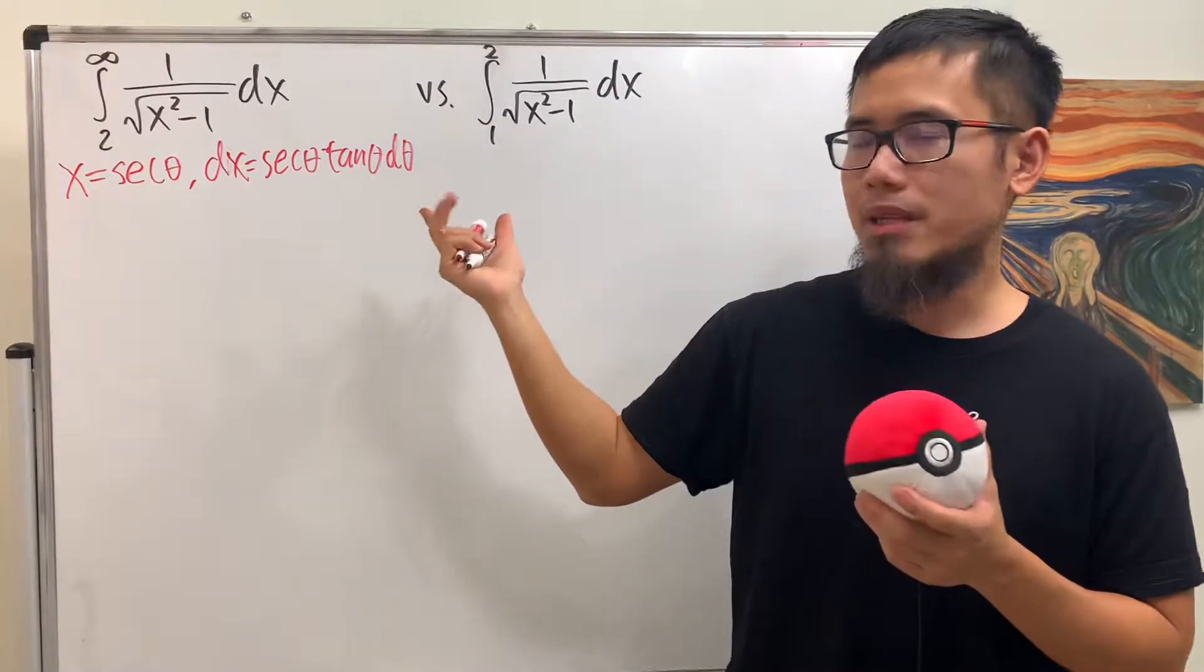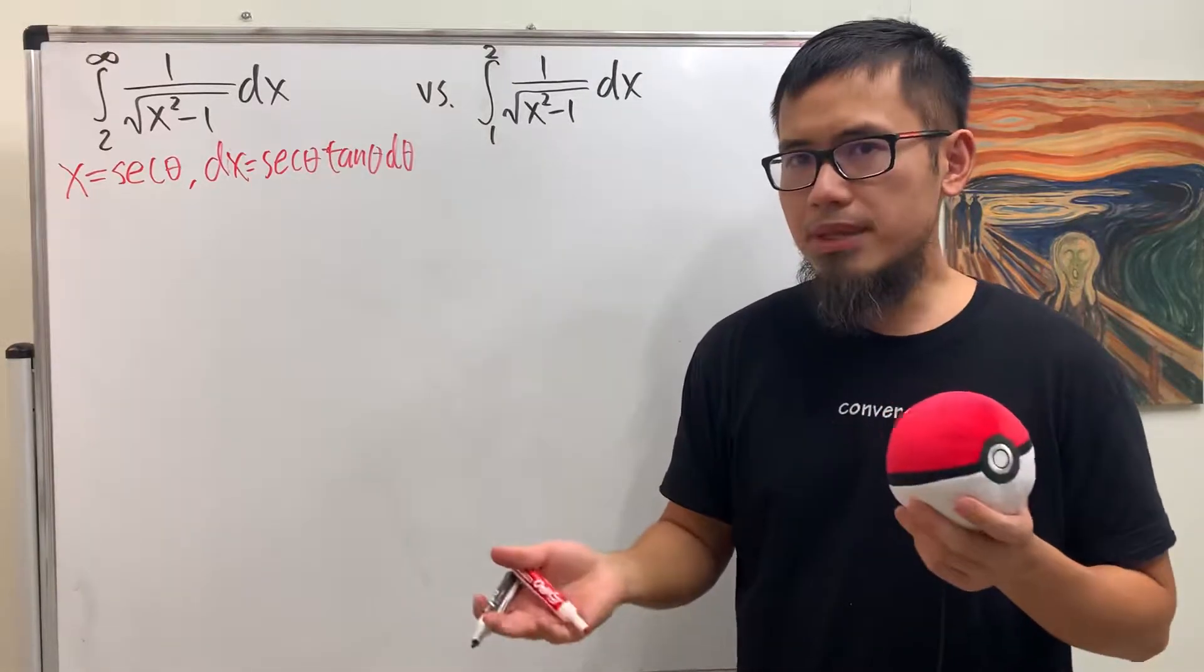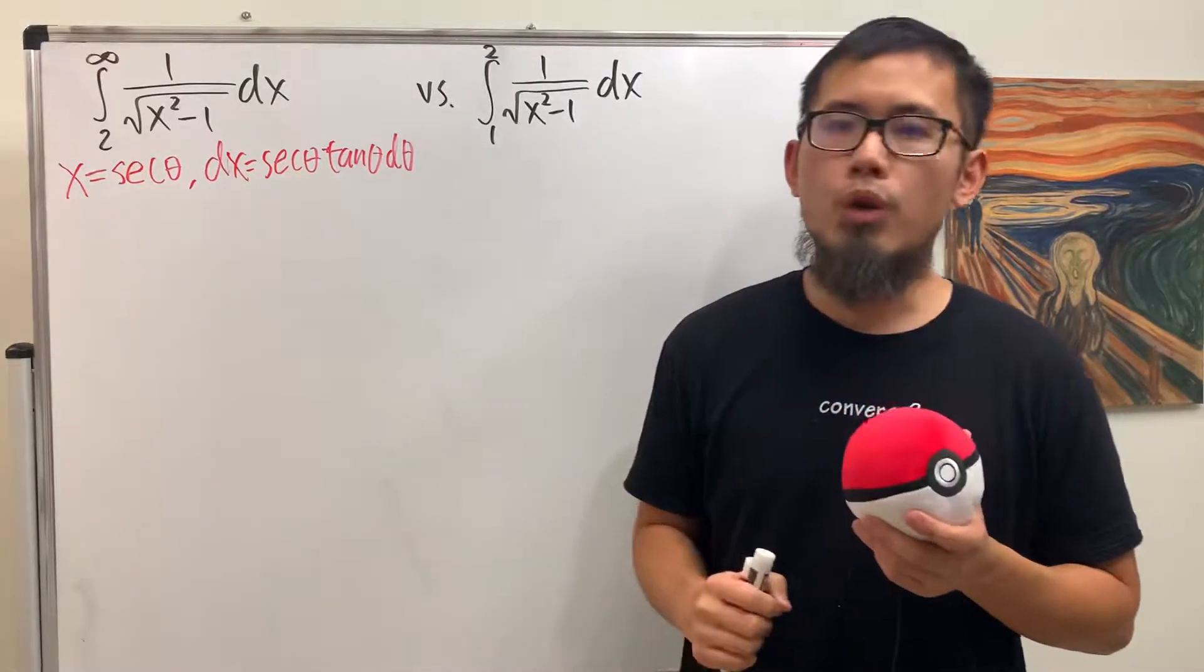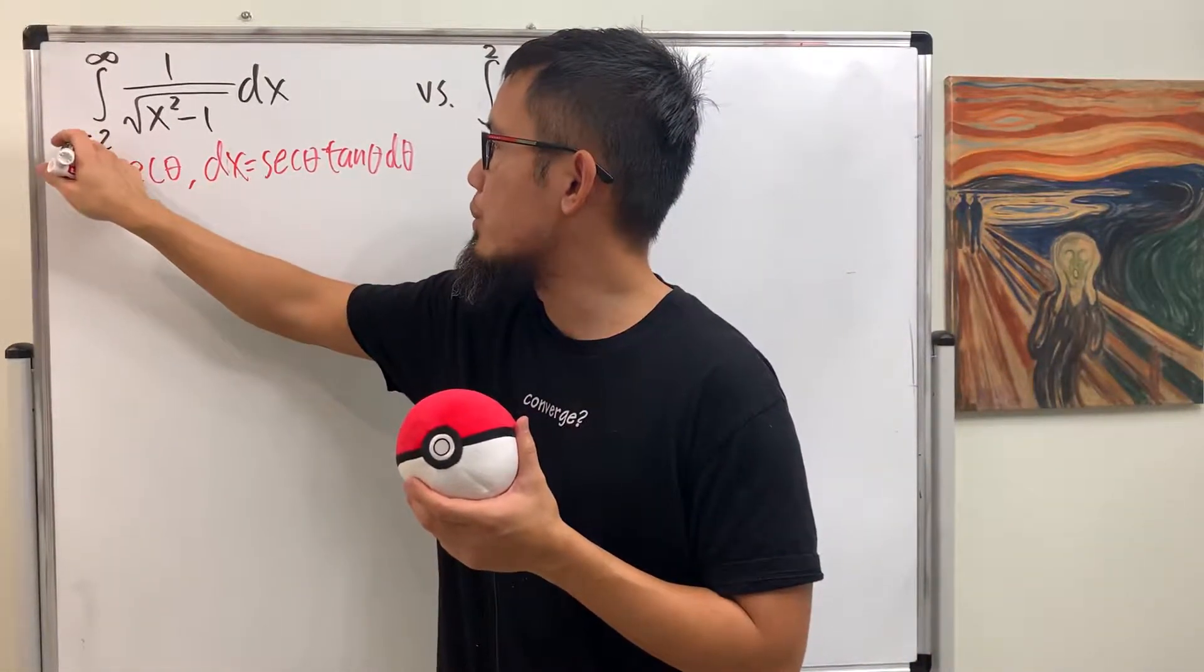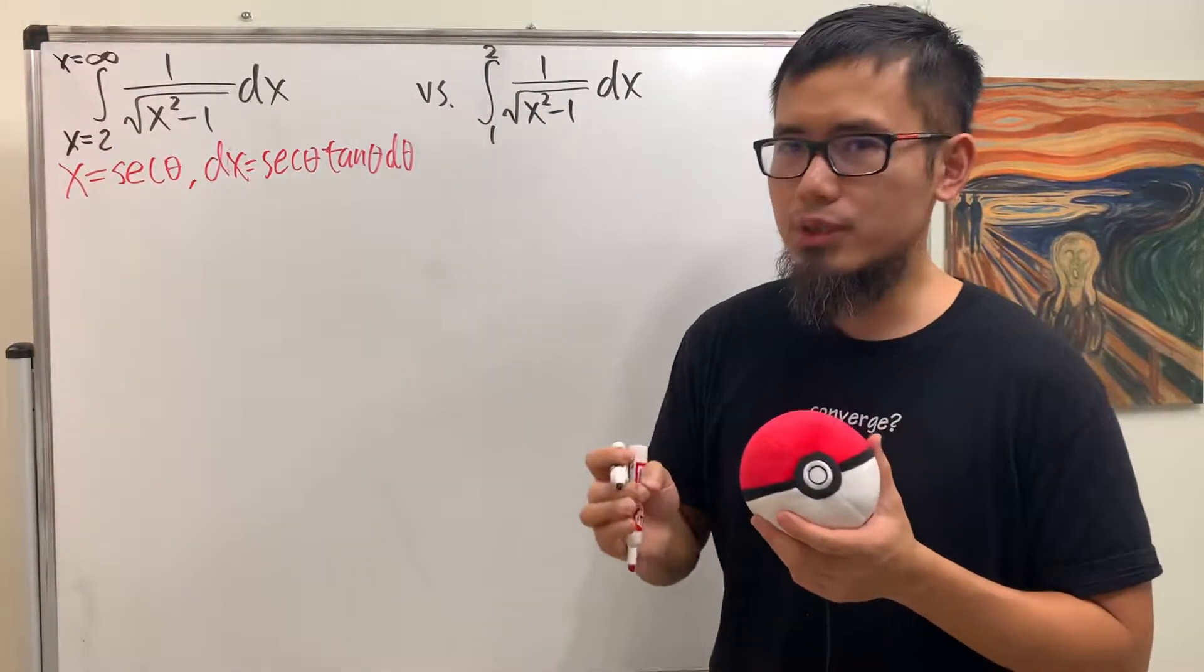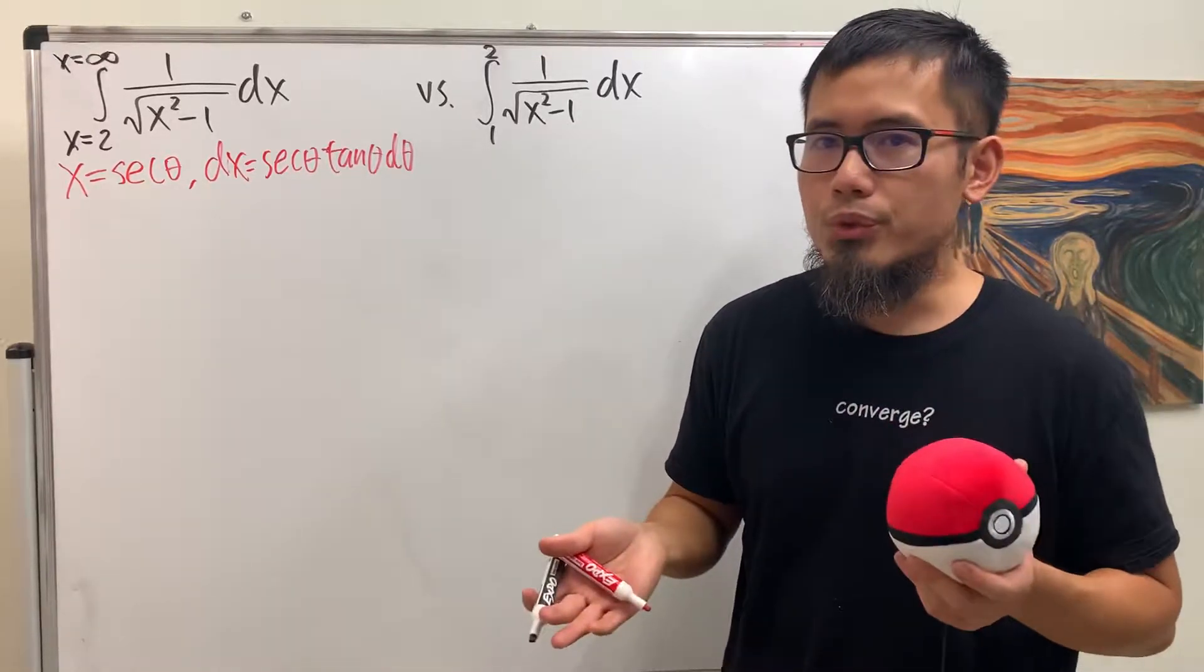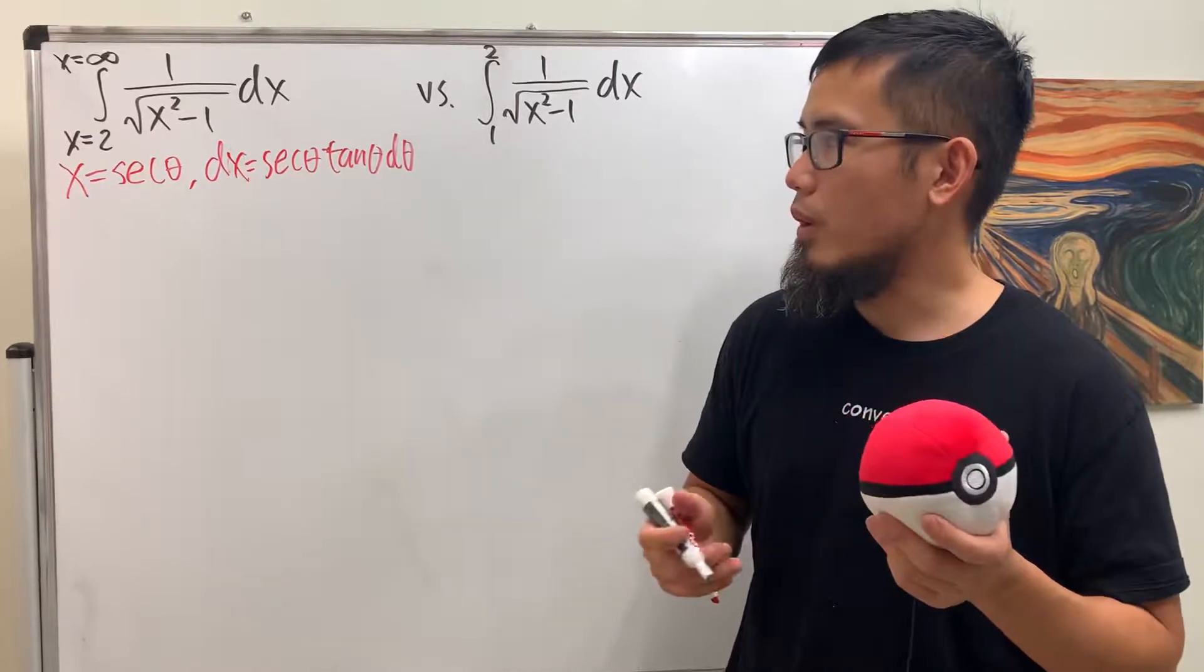Now, go ahead and just plug in everything to the original integral, and it depends on how you want to do it. You might want to finish everything in the theta world, and if you want to do that, well, here is x equals 2, and here is x equals infinity. So you have to just do this one very carefully. It's really up to you to see if you want to work out the trig sub or not.